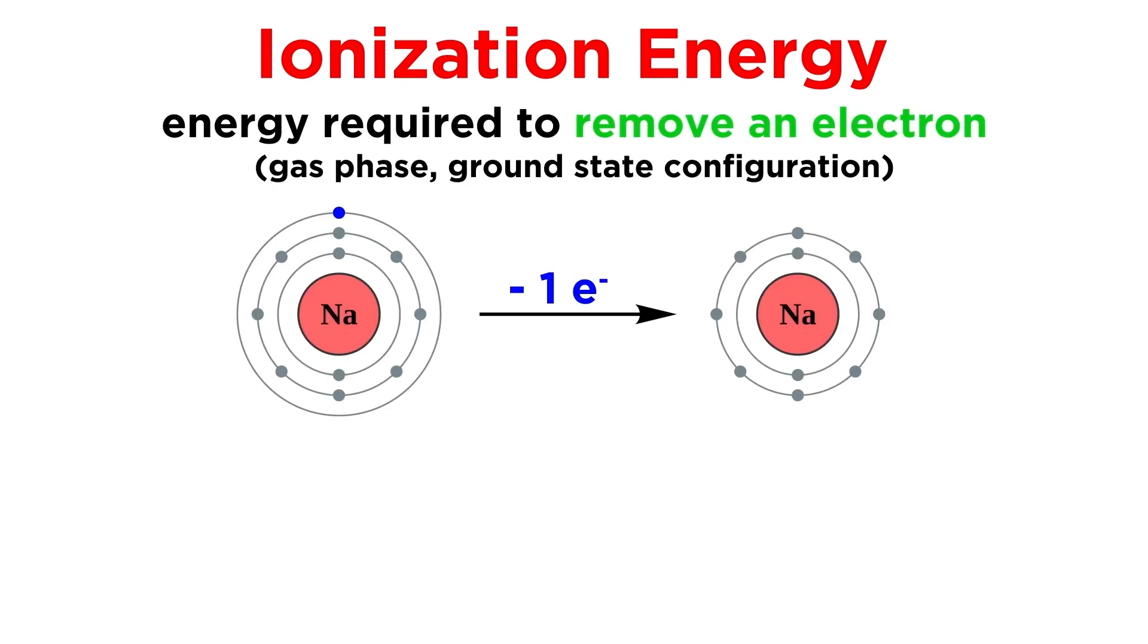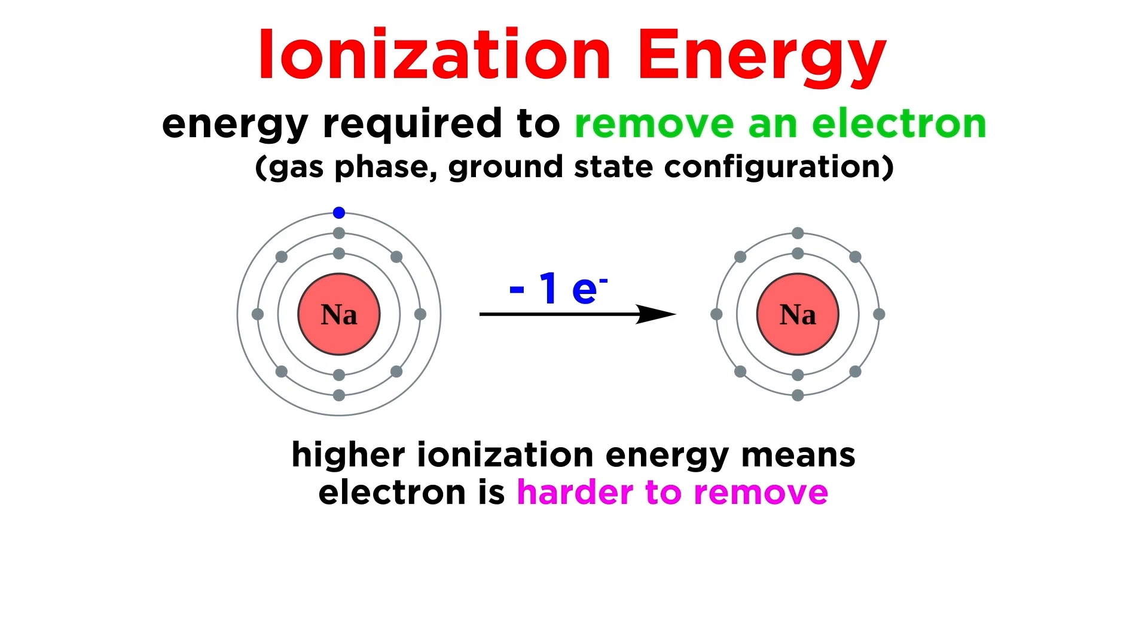Next let's look at ionization energy. This is defined as the energy required to remove the outermost electron from an atom in the gas phase and in its ground state configuration. The higher the ionization energy, the more difficult it is to remove the electron, which tells us something about the atomic radius of the atom as well as the effective nuclear charge felt by the electron.